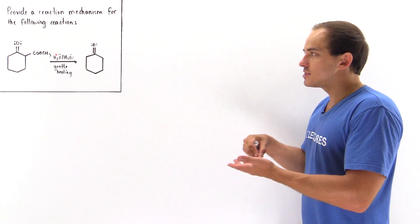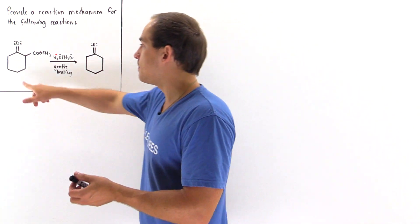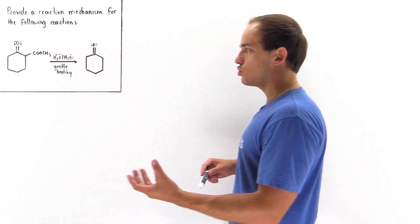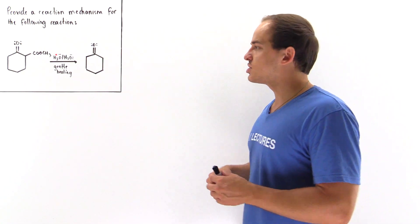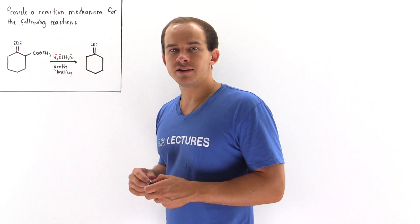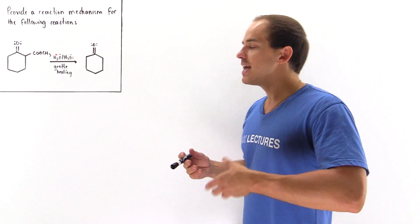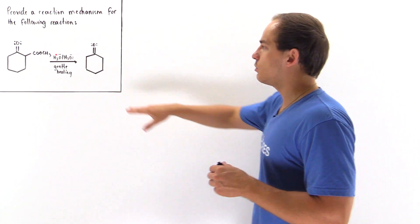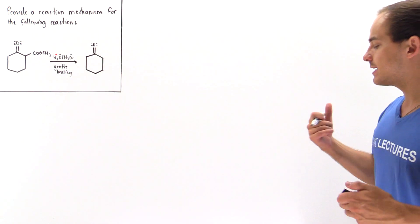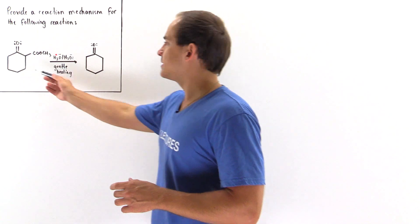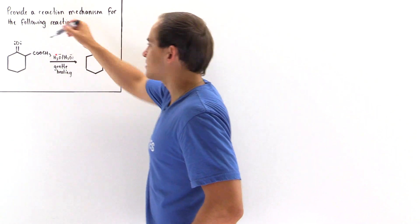It's a hydrolysis reaction under acidic conditions to transform the beta-keto ester into the beta-keto acid. Then we take the beta-keto acid and gently heat it to transform it into this ketone, as well as a carbon dioxide molecule that is not shown. So let's write the reaction mechanism, beginning with the starting material, and let's expand this ester group here.